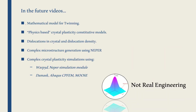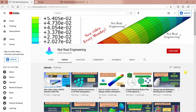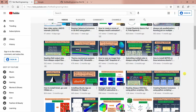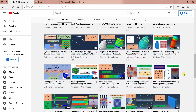For future videos in this series, we will see some mathematical models for twinning, some physics-based crystal plasticity constitutive models — we already saw phenomenological-based models in part 2. We will also have a video about dislocations in crystal and dislocation density, tutorials to create complex microstructures using software NAPR, and complex crystal plasticity simulations using softwares like Warp 3D, NAPR simulation module, Damask, Abaqus, and MOOSE. If you have any questions, please let me know in the comments. If you like this video, please visit the channel homepage for similar videos and don't forget to subscribe. Thank you for watching.